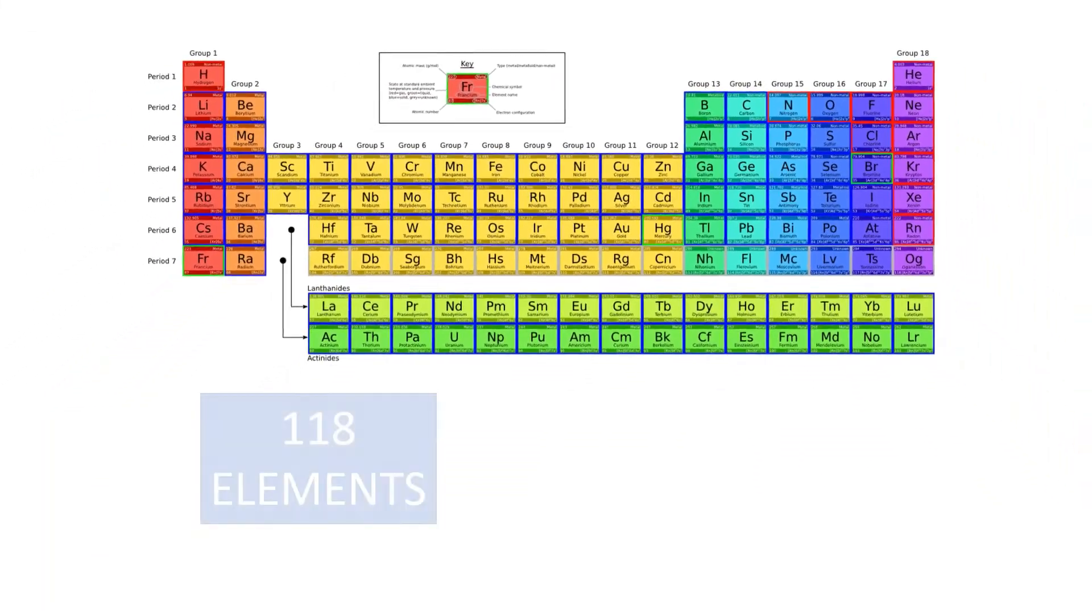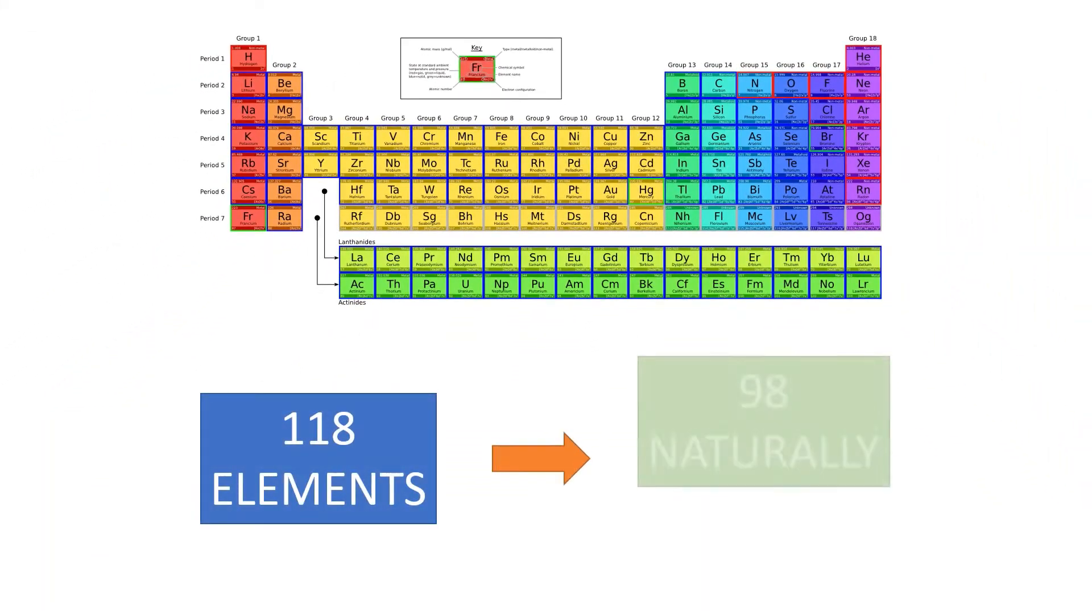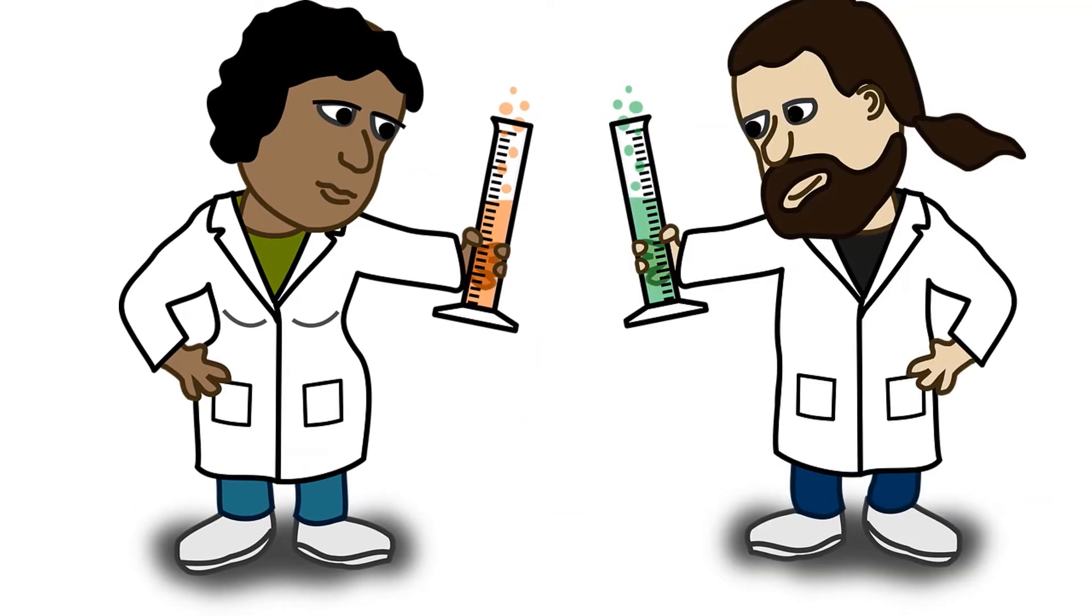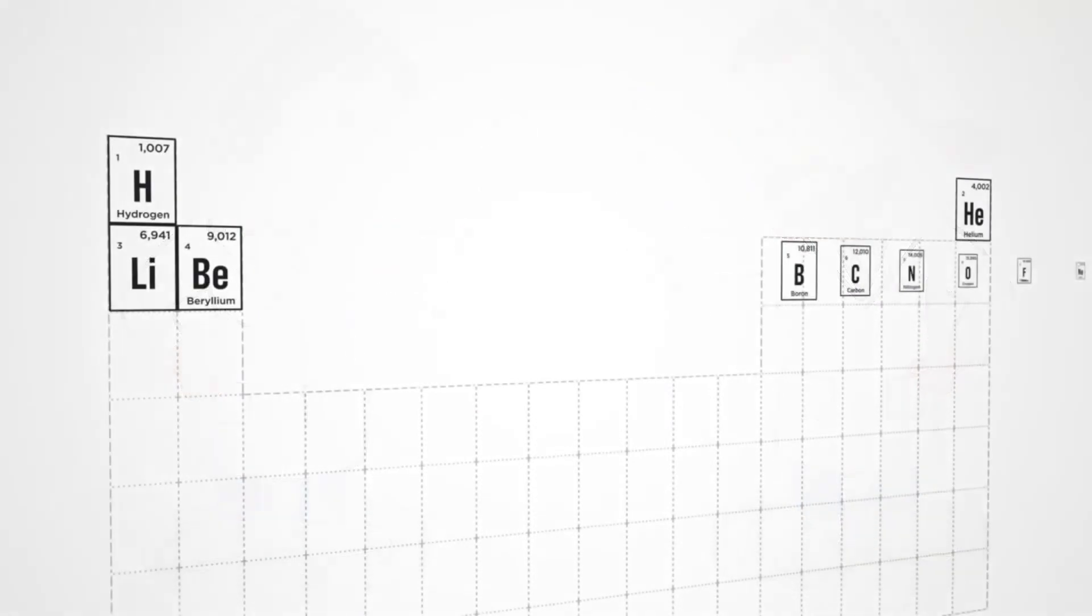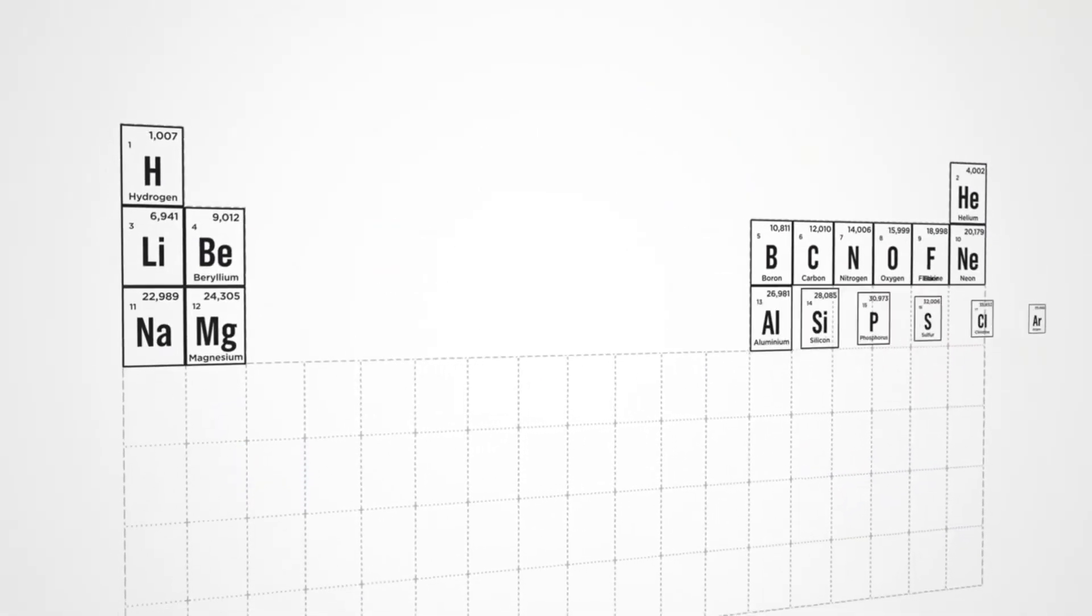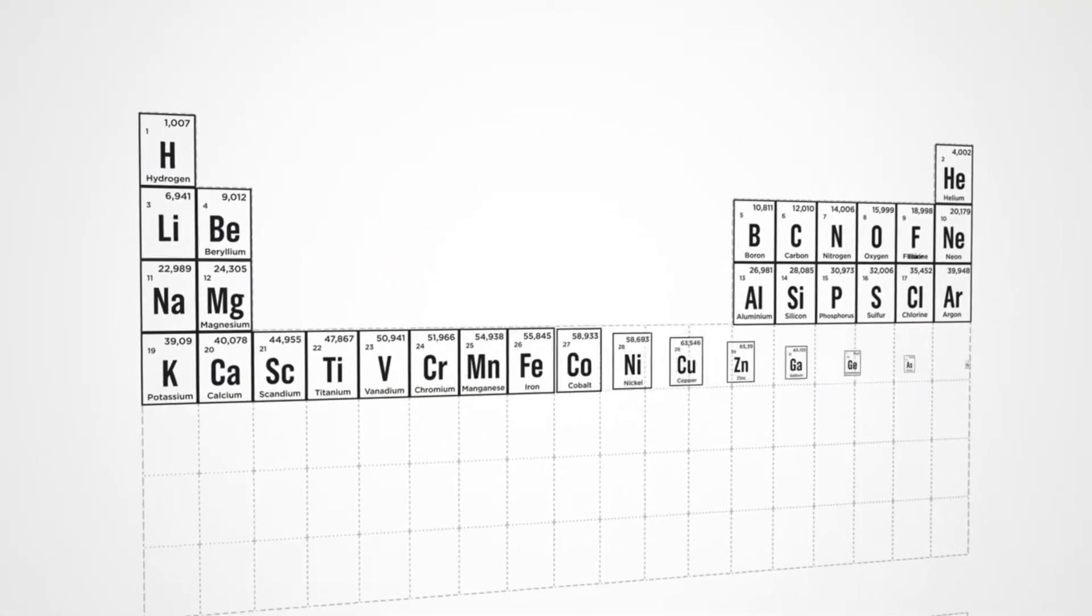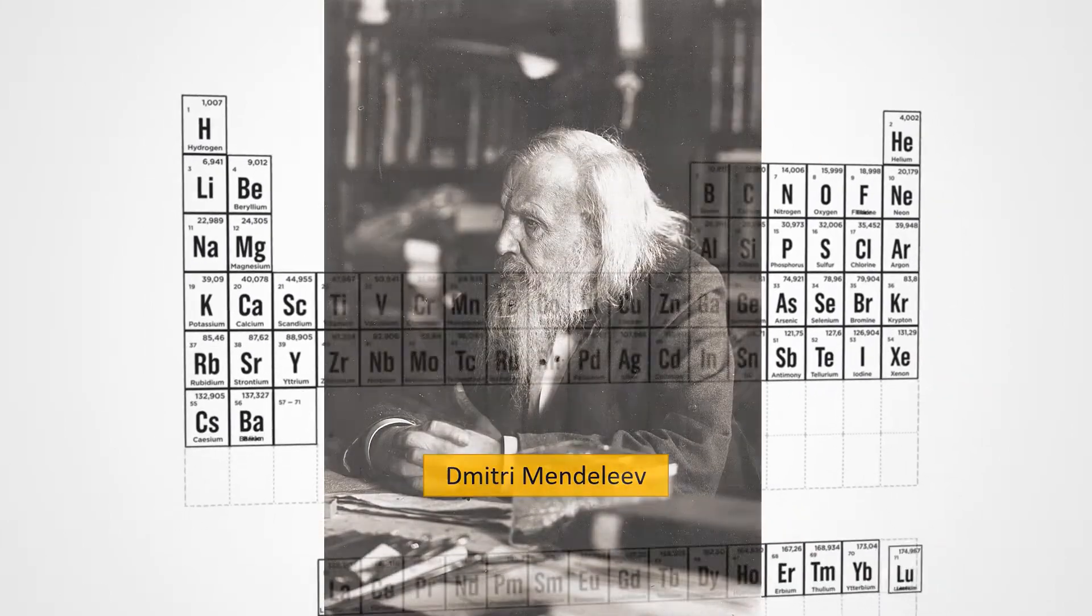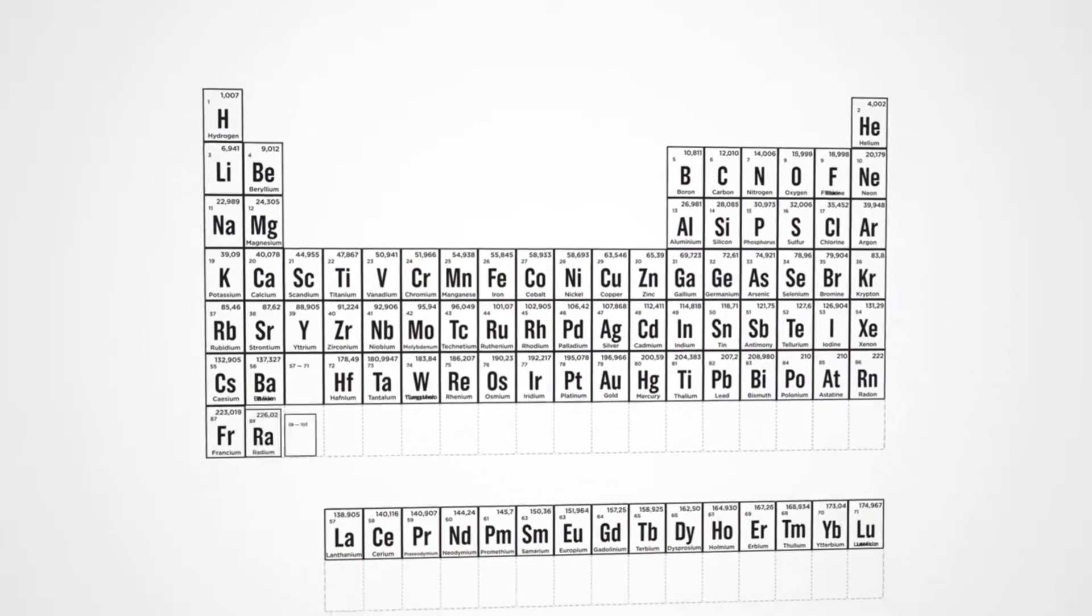There are 118 elements, but only 98 of them occur naturally. The remaining elements are so unstable they require scientists to synthesize them in laboratories. The periodic table organizes all these elements. Russian chemist Dimitri Mendeleev designed the periodic table in 1869.